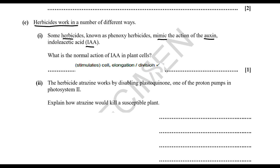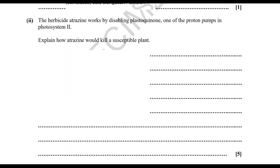They then discuss the herbicide atrazine. Atrazine works by disabling plastoquinone, one of the proton pumps in photosystem 2. The question asks you to explain how atrazine would kill a susceptible plant — this requires explaining the consequences of disabling a proton pump in photosystem 2.